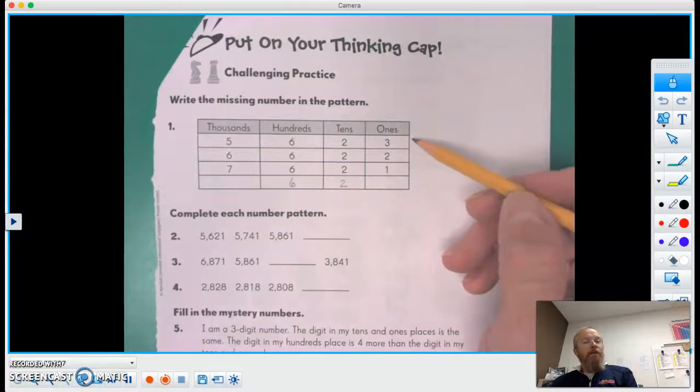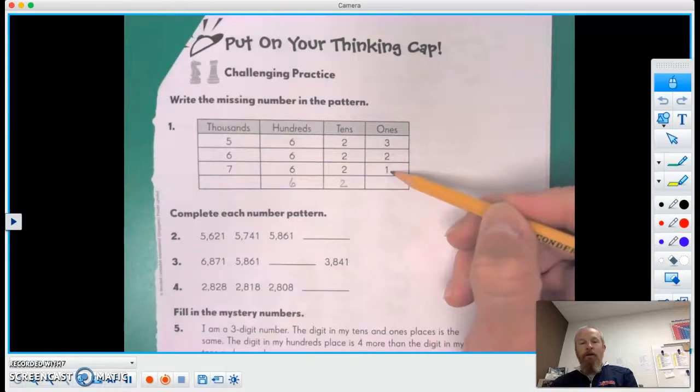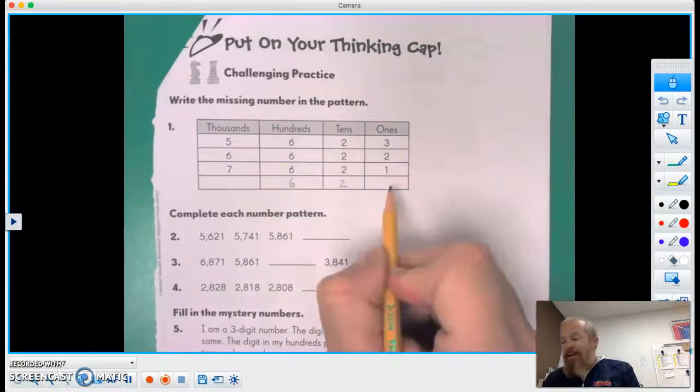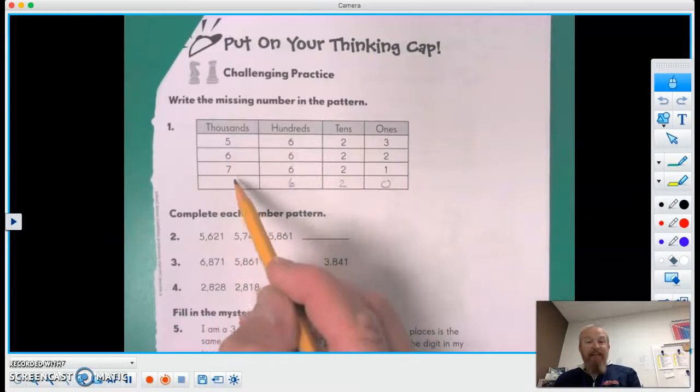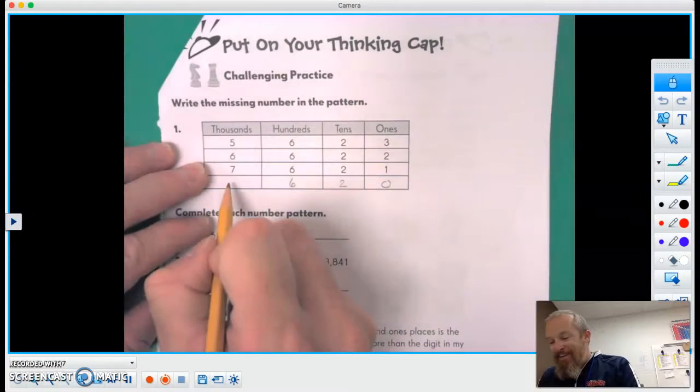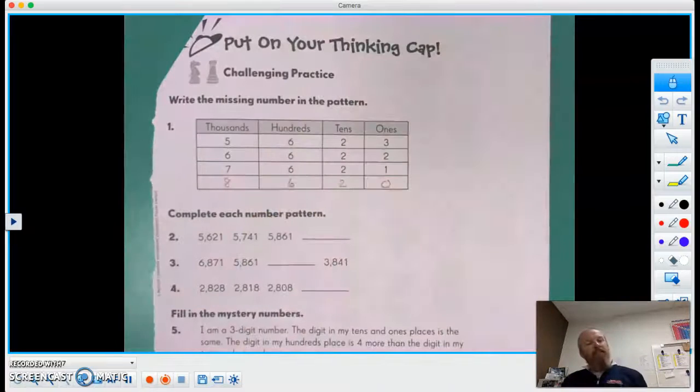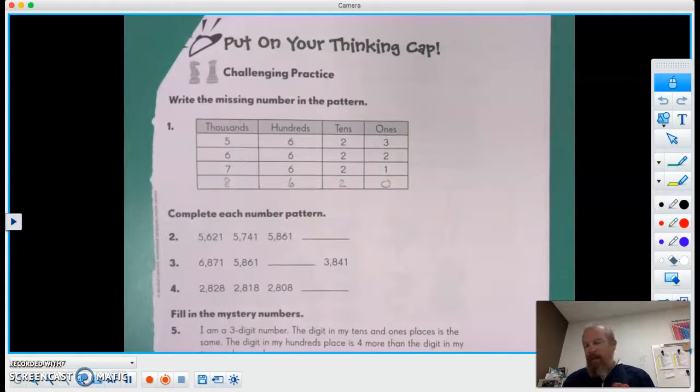And now let's just look at the ones column: three, two, one, zero, five, six, seven, eight. Just kind of had to look at it a little bit differently, right? That's kind of tricky.